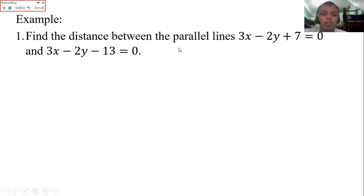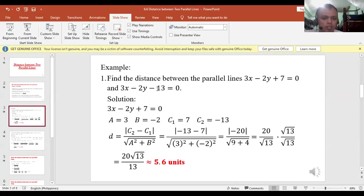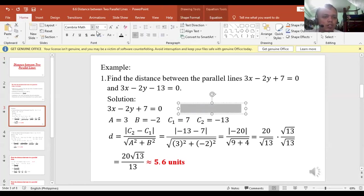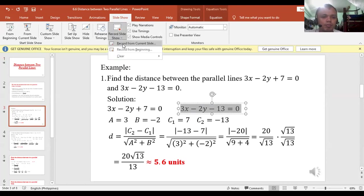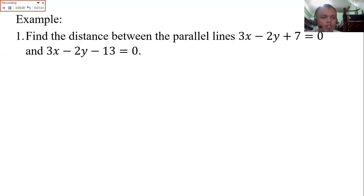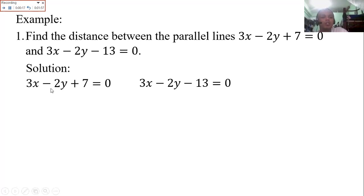Example: Find the distance between the parallel lines 3x minus 2y plus 7 equal to 0 and 3x minus 2y minus 13 equal to 0. These are our lines. Find the distance between the two parallel lines 3x minus 2y plus 7 equal to 0 and 3x minus 2y minus 13 equal to 0. You can see the first term is the same, 3x, the second term is the same, negative 2y. They only differ in the third term or the last term.